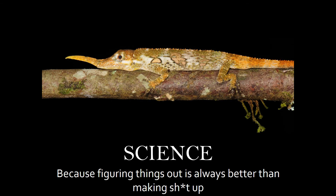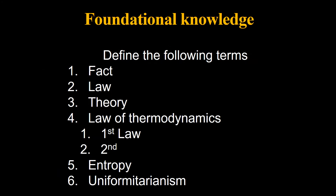I love science — and figuring things out is always better than making it up. For your foundational knowledge, make sure you can define fact, law, and theory. You also need to memorize the laws of thermodynamics — they govern energy and how it's transferred and transformed — and you need to know both the first law, the second law, and entropy. I keep bringing up the word uniformitarianism — it's a big word, but 'uniform' just means everything's the same.